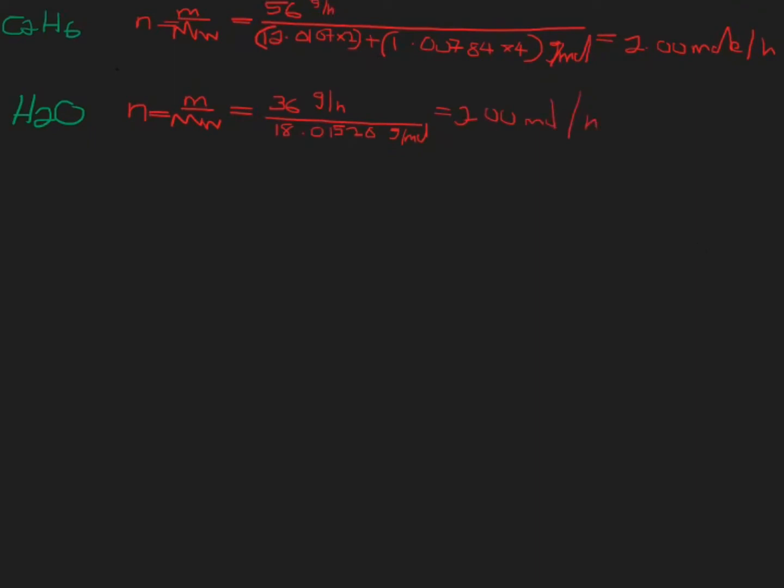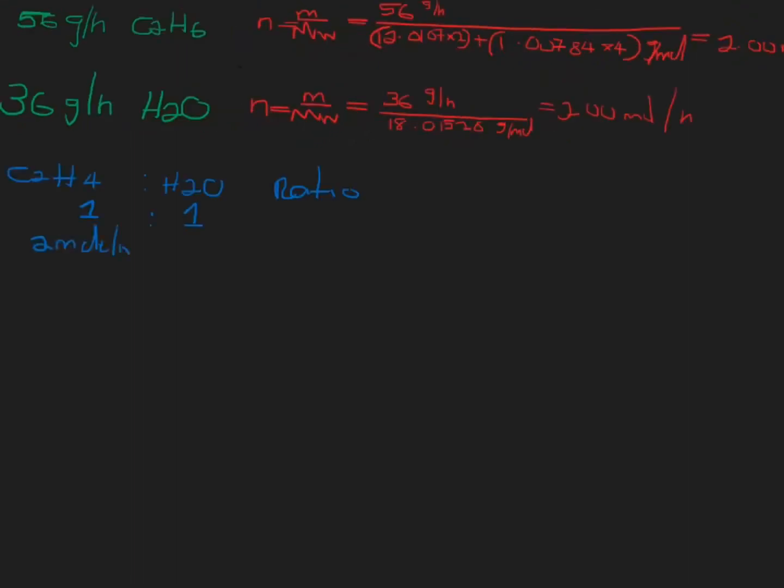Next step is to incorporate ratios in order to get that which we want to achieve in the limiting reagent. First, I am going to represent my ratios which is 1:1, ethylene and water. For every 1 mole of ethylene, we will need 1 mole of water.